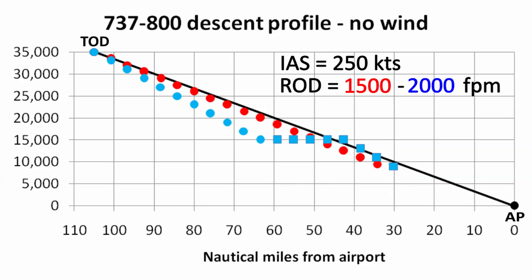Roughly speaking, the objective during the descent is to get to this point — a good place to start the approach. It's an altitude of 10,000 feet, a distance of 30 nautical miles out from the airport.